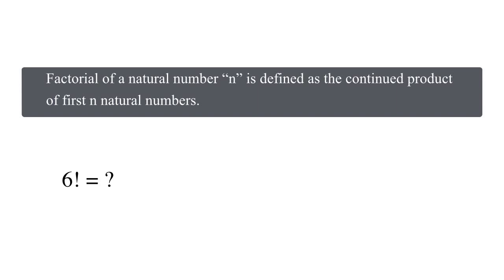Again, the definition says, the continued product of the first n natural numbers. So in our case, the continued product of the first 6 natural numbers 1, 2, 3, 4, 5 and 6. So 6 factorial is equal to 6 into 5 into 4 into 3 into 2 into 1, which would be equal to 720.